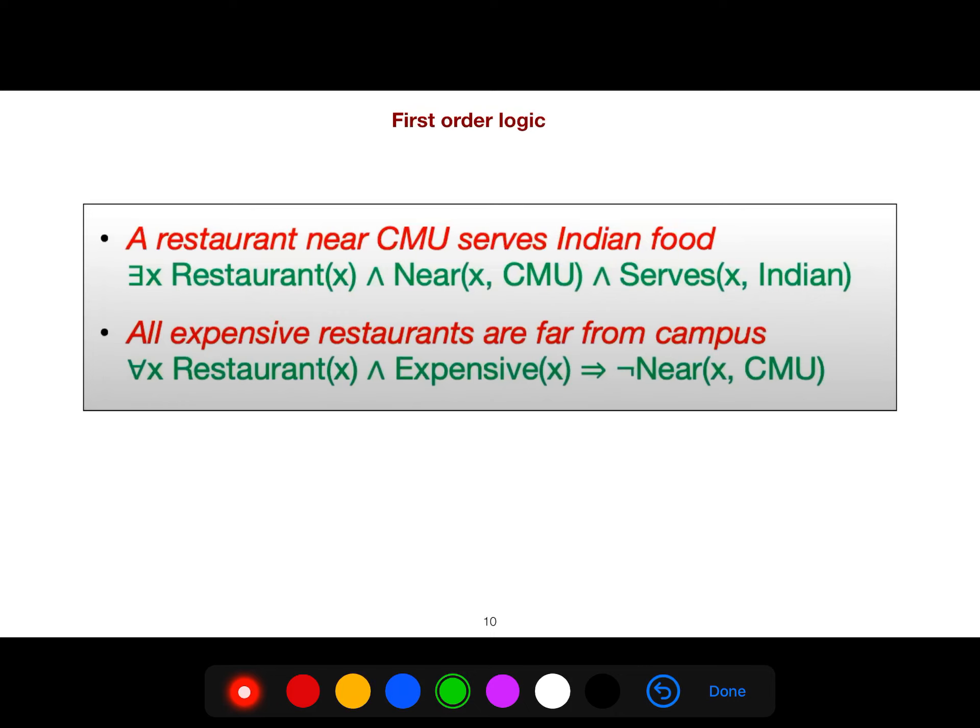First-order logic: an example could be a restaurant near Carnegie Mellon University serves Indian food. Think about it. This is an operator, these are operands. For example, X and Carnegie Mellon University are inputs to the operator near. This one is a boolean expression. These are boolean expressions, and you can use AND expression. Everything could be things like that, but it is very short of the logic.